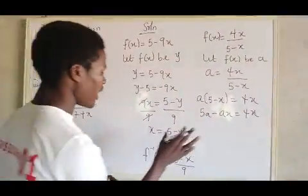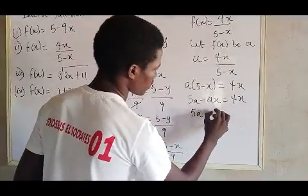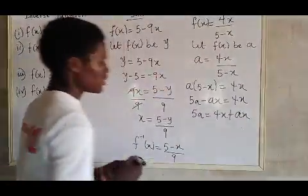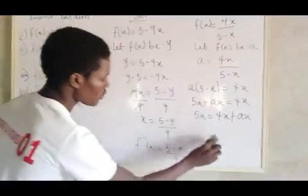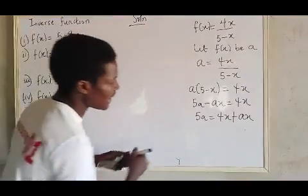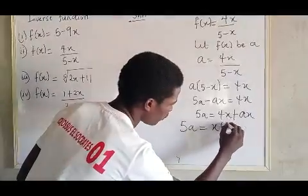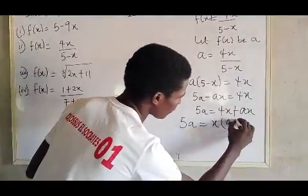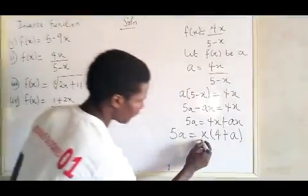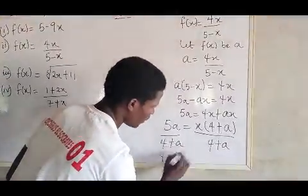Don't forget you are trying to make X the subject of the formula. So you have five Y equals four X plus YX. The next thing you need to do is see what is common in these terms. X is common on the right-hand side, so you factor it out: five Y equals X times four plus Y.